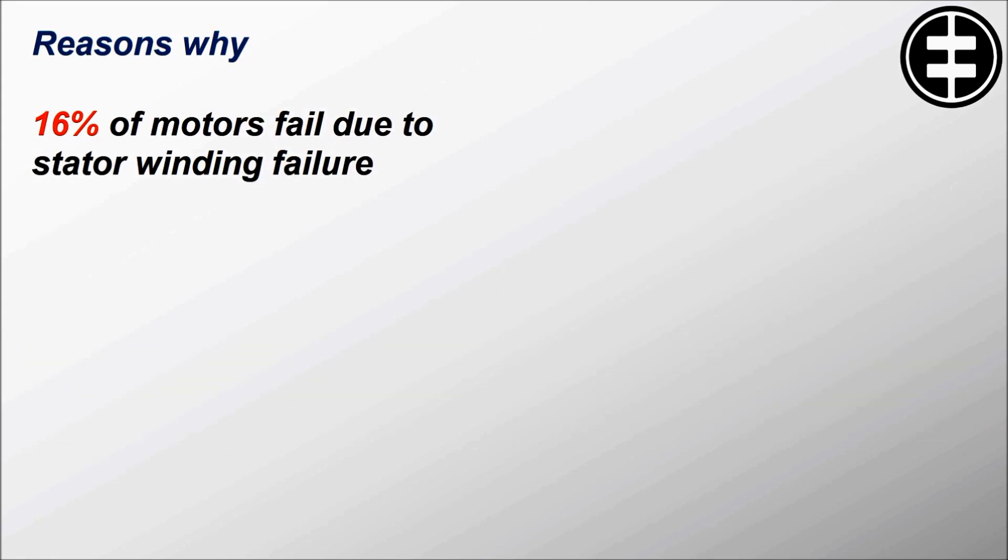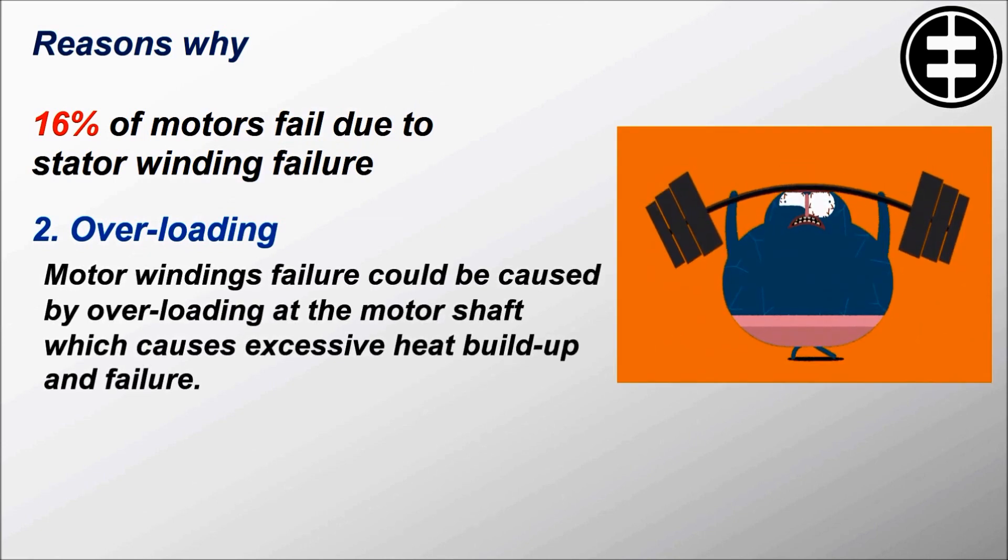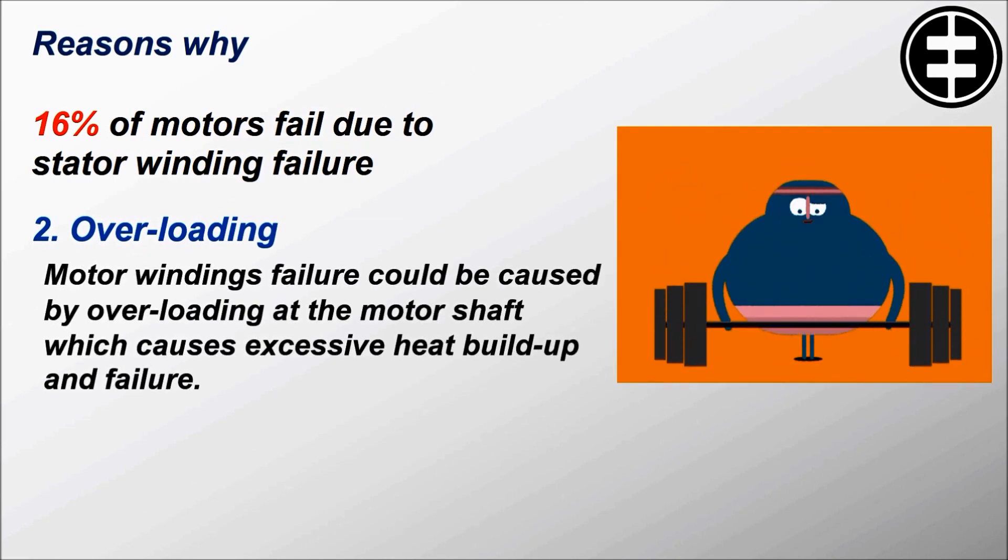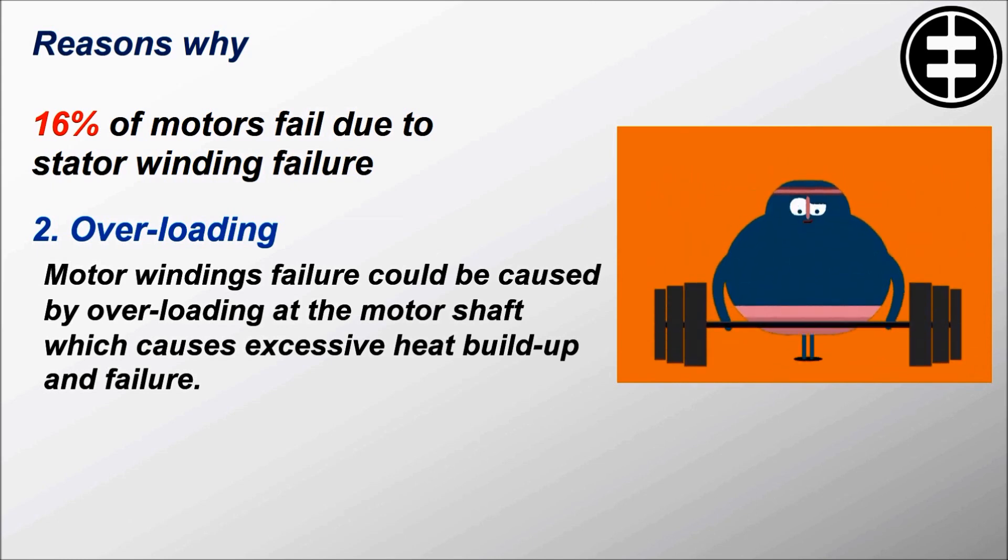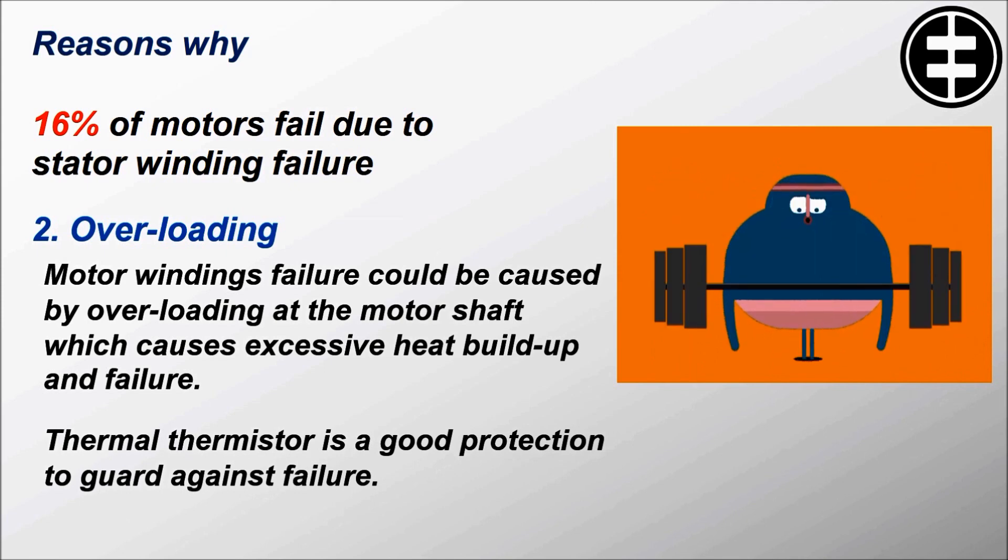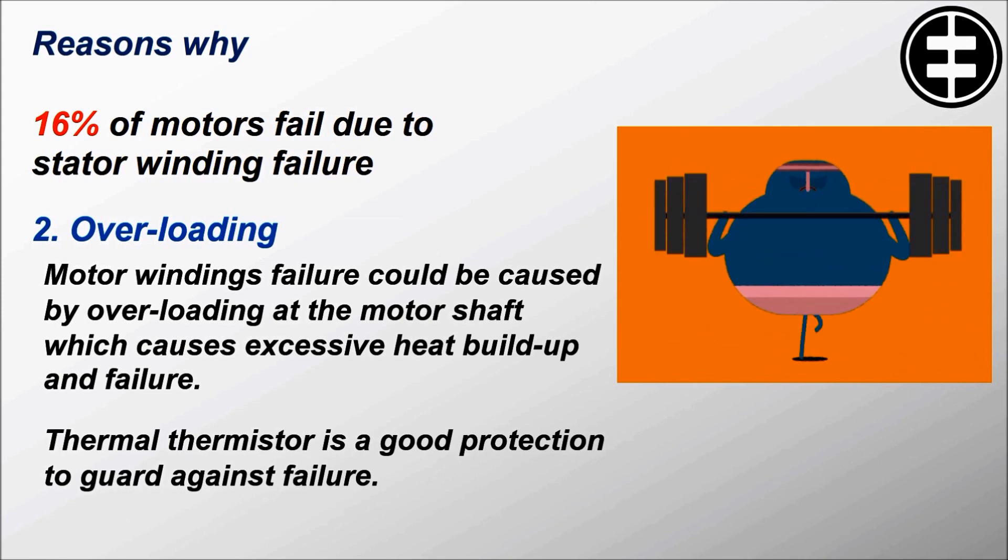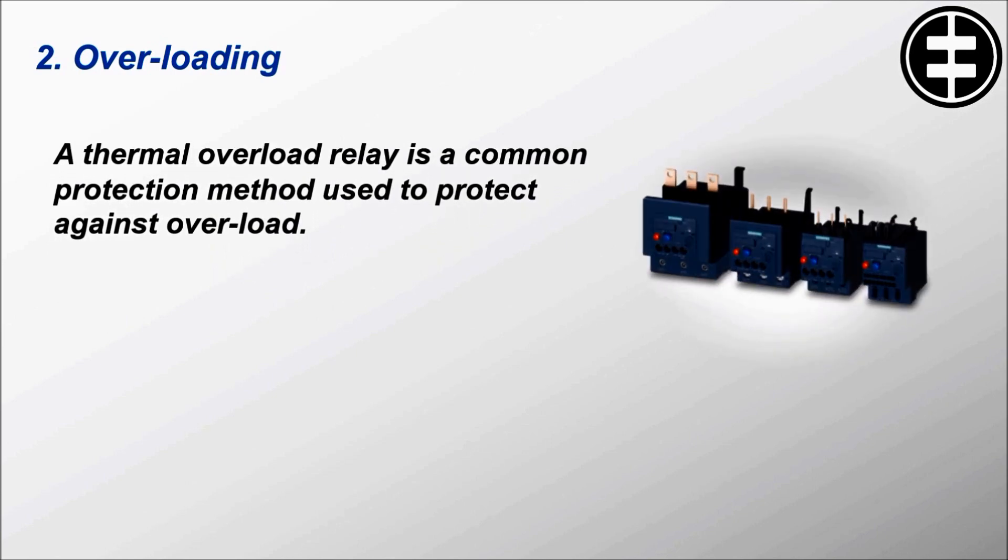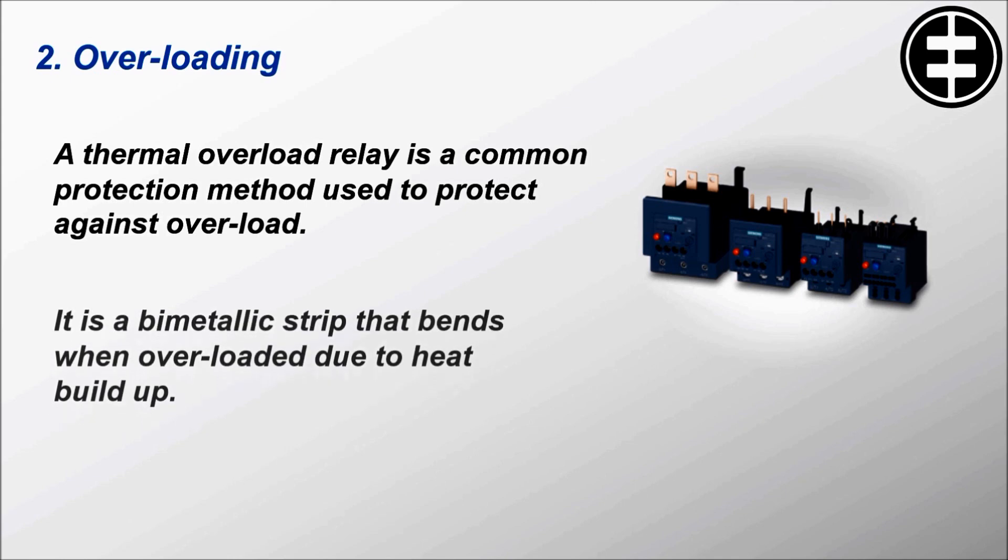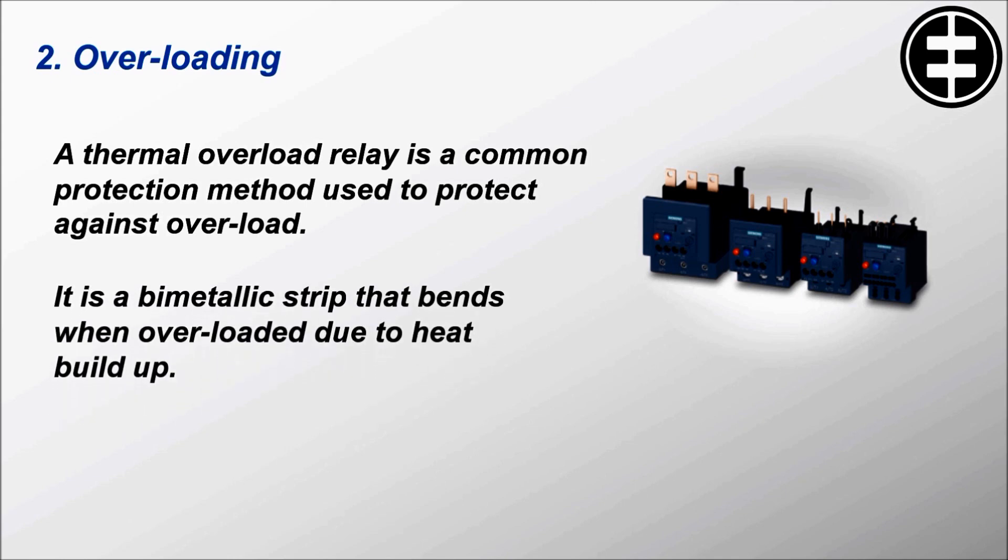Reason number 2 is overloading. Motor winding failure could be caused by overloading at the motor shaft which causes excessive heat buildup and failure. Thermal thermistor is a good protection to guard against failure. A thermal overload relay is a common protection method used to protect against overload. It is a bimetallic strip that bends when overloaded due to heat buildup. Normal operating currents will not cause this to happen.